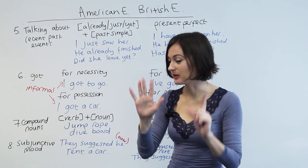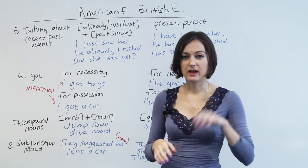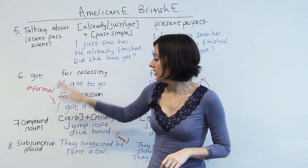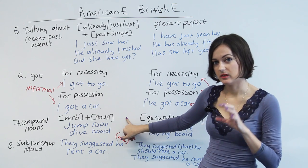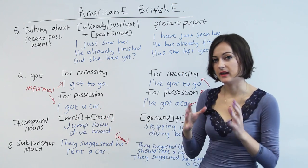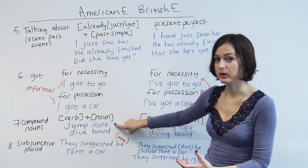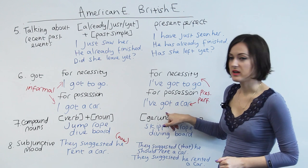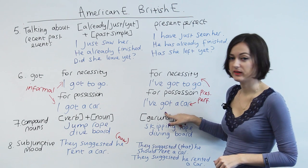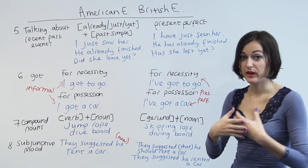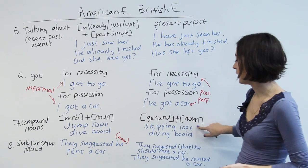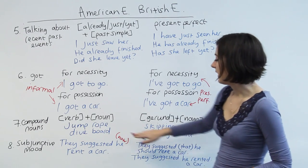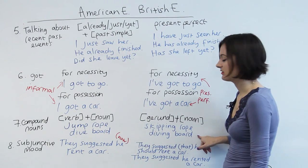Number seven: compound nouns. A compound noun is when you have two nouns together and the combined meaning is one noun. In American English, the form is verb plus noun, giving examples like 'jump rope' and 'dive board.' Compare that to British English, where we use the form of gerund plus noun — that is, verb plus -ing. So our preferred forms have -ing: 'skipping rope' means the same as 'jump rope,' and the American 'dive board' compares to the British 'diving board.'